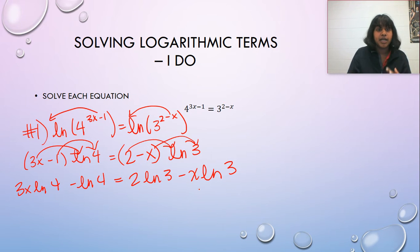And the reason we do this is because we're trying to get all of our x's to one side and all of our non-x's to the other. So that's what we're doing. So I'm going to move over this natural log of 4, and I'm going to move over this x natural log of 3.